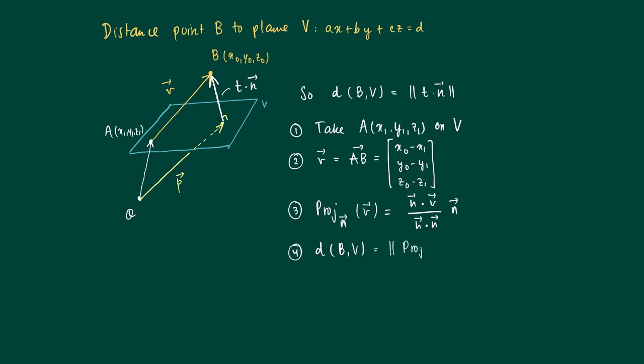So the distance of B to the plane V is no more than the length of the projected vector, which is the projection of AB on n. So since we are given the vector AB in coordinates, we may calculate the projection of V on n.